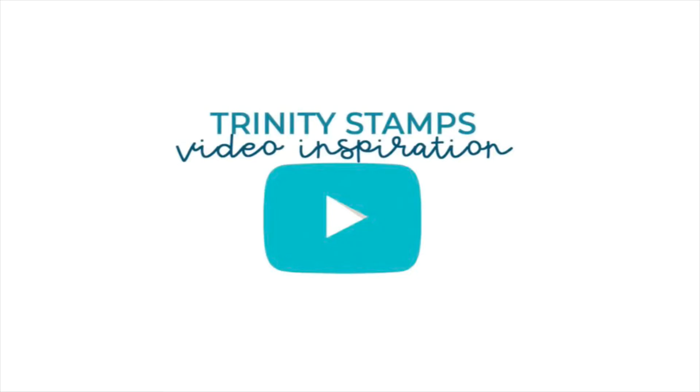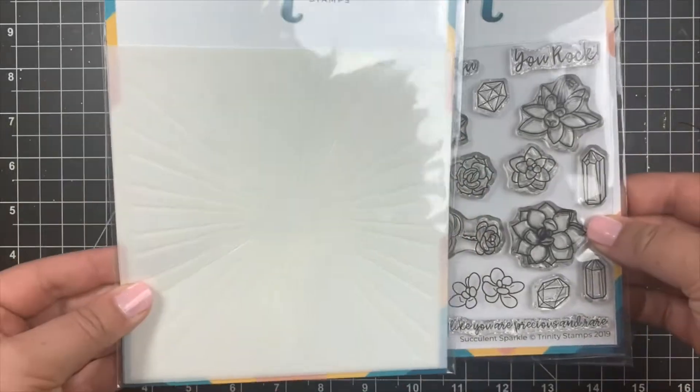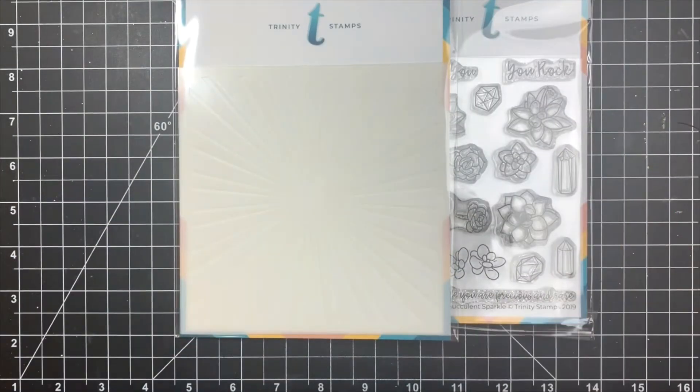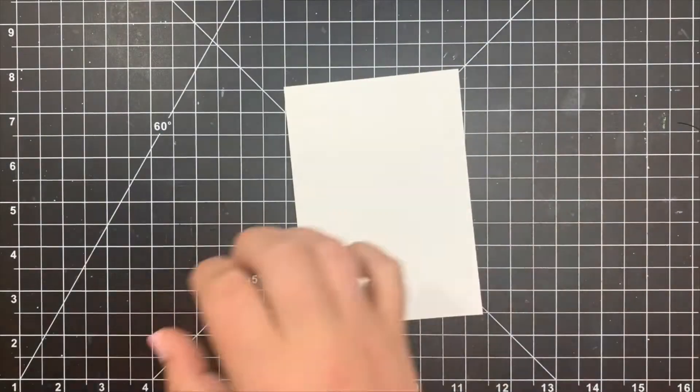Hey everybody, it's Courtney. I'm here with a quick card using some Trinity stamp supplies. I'm going to be using the succulent sparkle stamp set as well as the catching some rays stencil. This is a layering stencil but we'll just be using one.